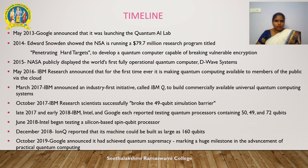In 2013, Google announced it was launching the Quantum AI Lab. In 2014, Edward Snowden revealed that the NSA is running a $79.7 million research program titled 'Penetrating Hard Targets' to develop a quantum computer capable of breaking vulnerable encryption. In 2015, NASA publicly displayed the world's first fully operational quantum computing D-Wave system. In 2016, IBM Research announced it was making quantum computing available to members of the public via cloud for the first time. In 2017, IBM announced an industry-first initiative called IBM Q to build commercially available universal quantum computing systems.